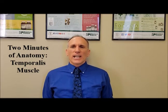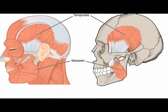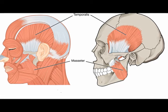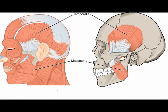This fan-shaped muscle has anterior fibers that have a vertical orientation, mid-fibers that have an oblique orientation, and posterior fibers that have a more horizontal orientation. The anterior and mid-fibers function to elevate the mandible, while the posterior fibers function to retract the mandible.